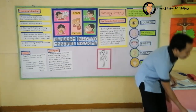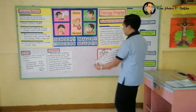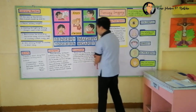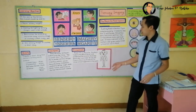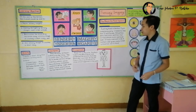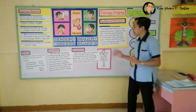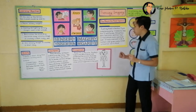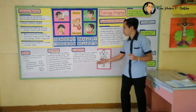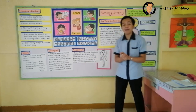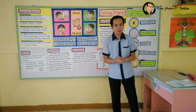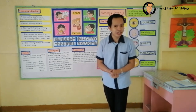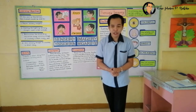For your assignment, I want you to read 'Ode to the West Wind' and underline the words that help you make a picture, because we are going to draw a visualization to show what happened in the poem. Do you have any questions about the lesson today? None? Are you sure?